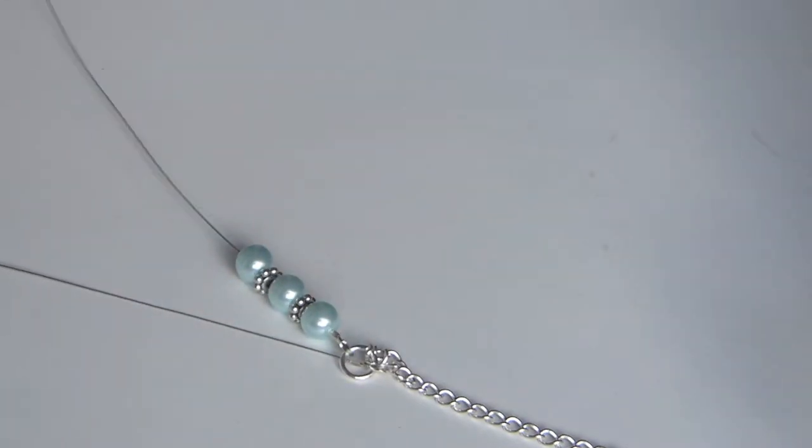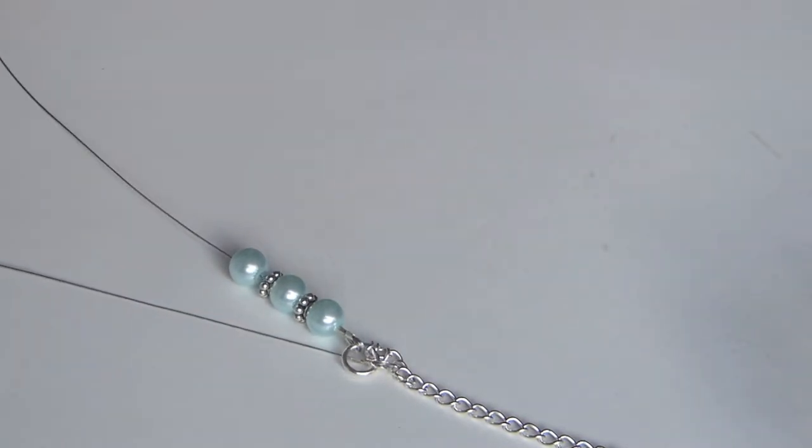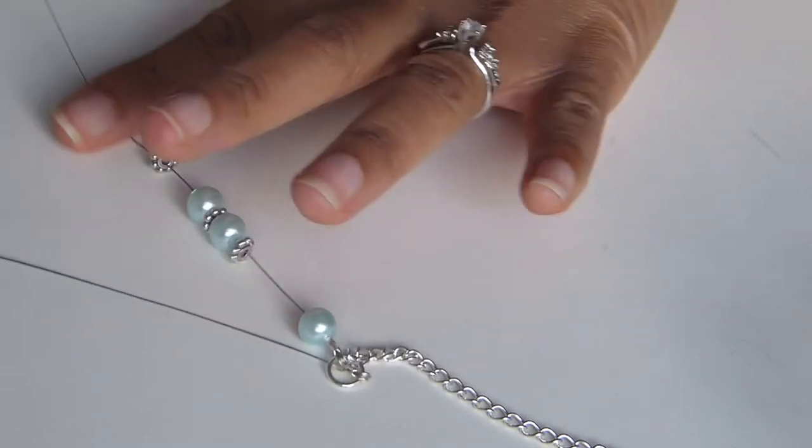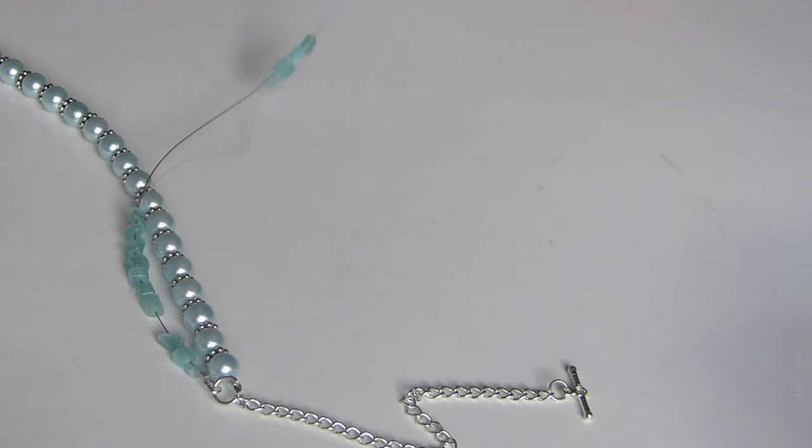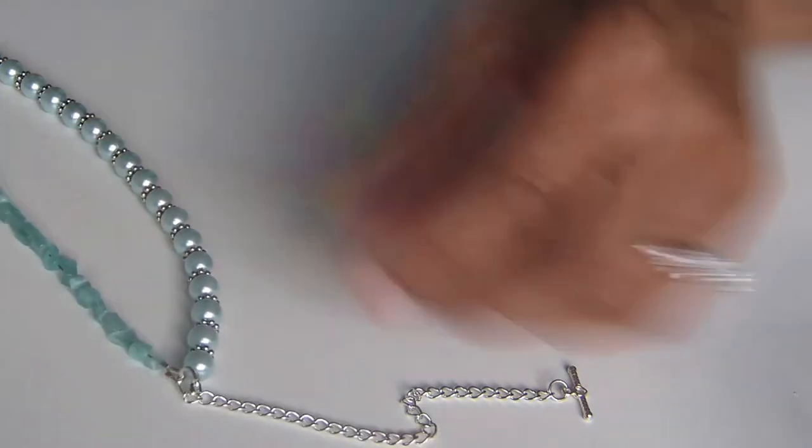I started first with my pearl strand, which includes the pearls and the spacer beads. You just want to continue beading until you've completed this whole strand. Then you can move on to your sea glass section.